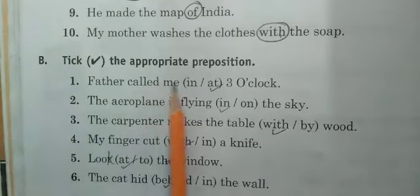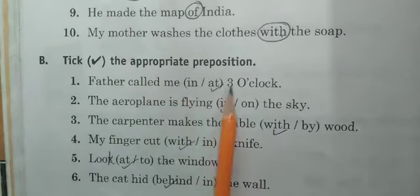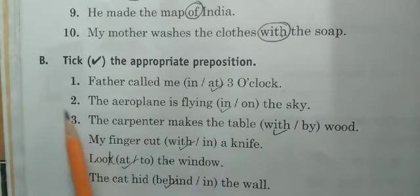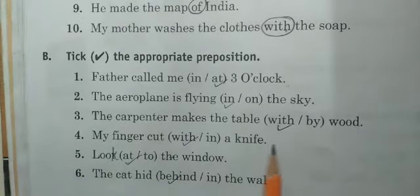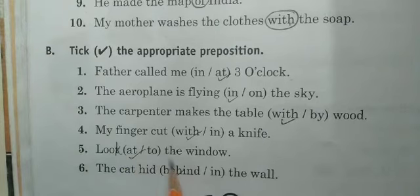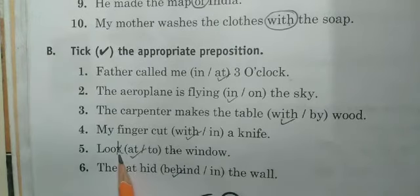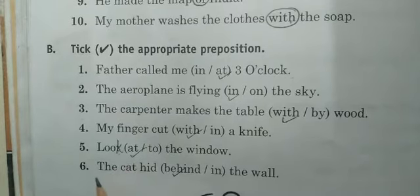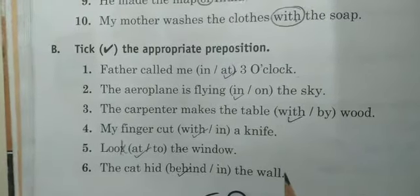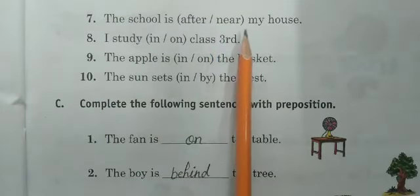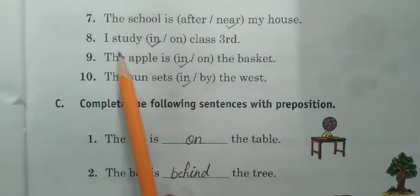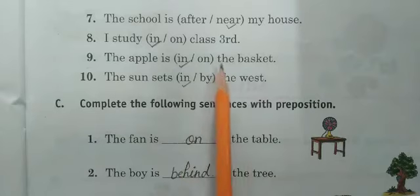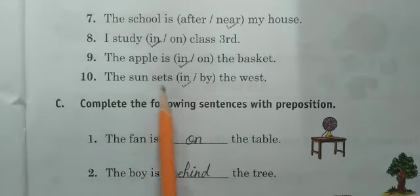Now B — tick the appropriate preposition. Jo sahi preposition word hai, uspar aap tick karo. First: father called me at three o'clock. Second: the airplane is flying in the sky. Third: the carpenter makes the table with wood. Fourth: my fingers cut with a knife. Five: look at the window — yahan par 'look' ki spelling galat hai, so aap yahan par 'k' isko thik karenge. Six: the cat hides behind the wall. Seven: the school is near my house. Eight: I study in class third. Nine: the apple is in the basket. Ten: the sun sets in the west.